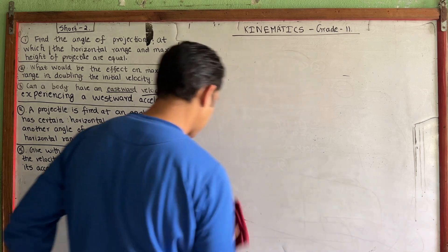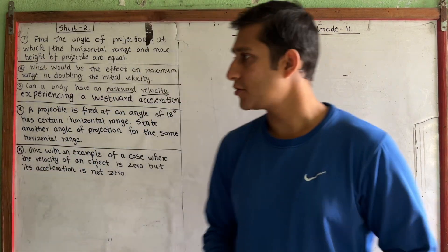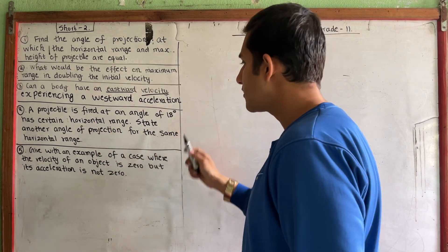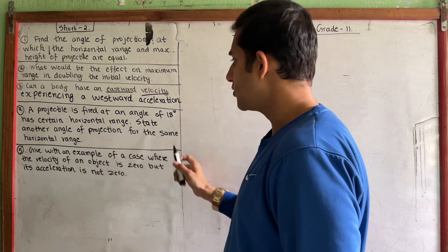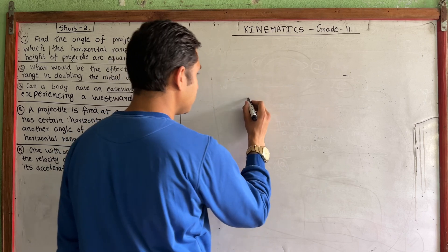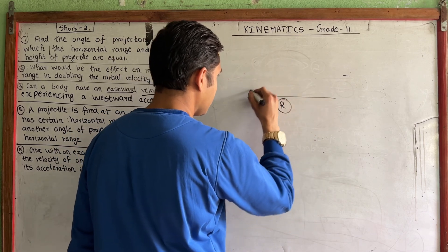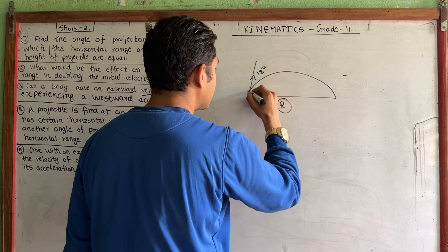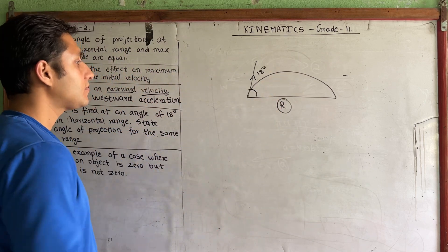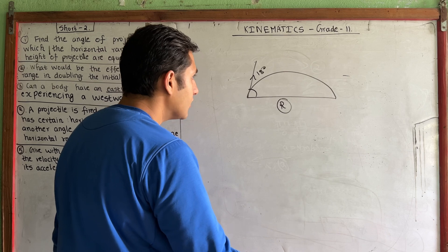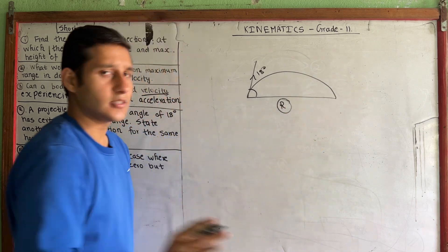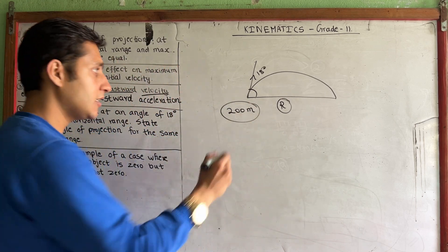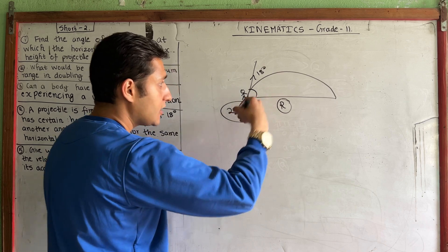Question number 4: A projectile is fired at an angle of 18 degrees and has a certain horizontal range. Find another angle of projection that gives the same horizontal range.